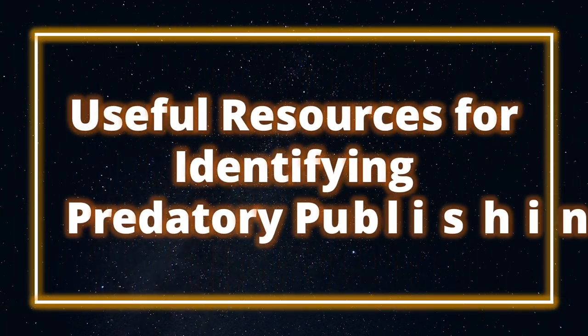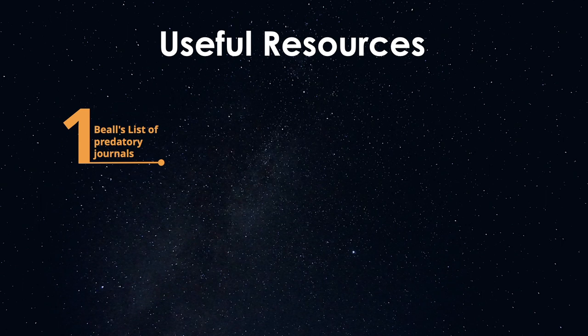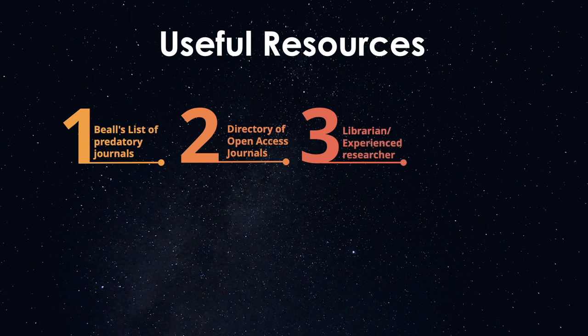Now we will look at some useful resources for identifying predatory publishing. Firstly, Beall's List, which is a popular and controversial list of potential, possible, or probable predatory publishers. Unfortunately, as of January 2017, the list is no longer updated; however, it still remains a valuable resource. Secondly, the Directory of Open Access Journals, which requires journals to follow the principles of transparency and best practice in publishing before they can be added to the list. If the journal is not listed in the Directory of Open Access Journals, it could be an indication that the journal is predatory, but keep in mind that it takes about a year of publishing before new journals can apply for indexing. Thirdly, ask a librarian or experienced researcher, as they have more experience in spotting predatory journals.